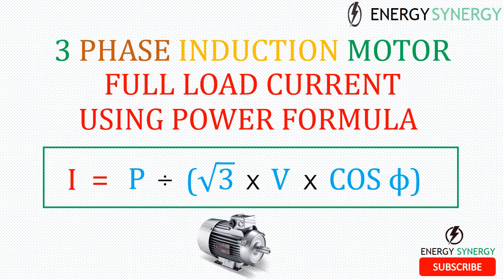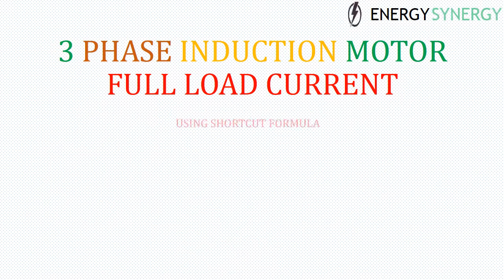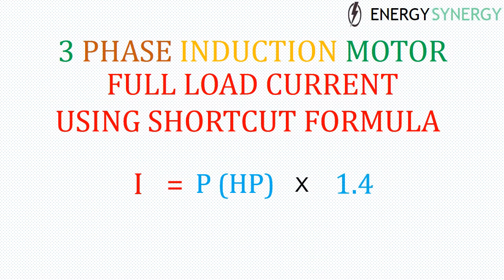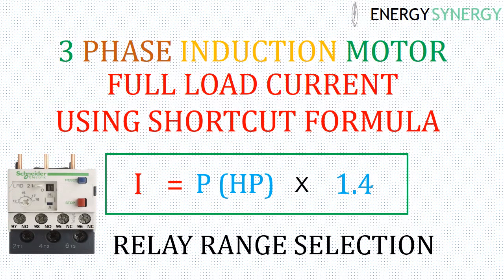Since there are a large number of motors in industries, it is not always practical to use that formula. So there is a shortcut method: the shortcut formula for calculating full load current of a three-phase induction motor is Full Load Current = HP × 1.4, where 1.4 is a multiplication factor. This formula is generally used to calculate the relay range for a motor. Please note that when you calculate current using this formula, you may get a small error in values, generally in decimal points.